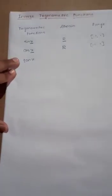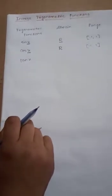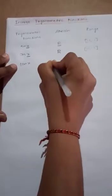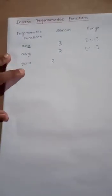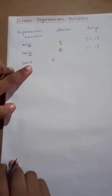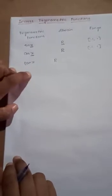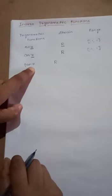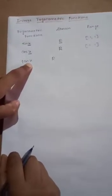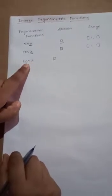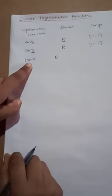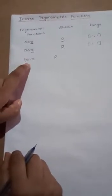Next is tan x. As you know, tan is written as sin/cos, so it depends on both sine and cosine values. Substituting: tan 0° = sin 0/cos 0 = 0, tan 30° = 1/√3, tan 45° = 1, tan 60° = √3. For x = 90°: tan 90° = sin 90/cos 90 = 1/0, which is not defined. Remember, for 90°, tan is not defined.